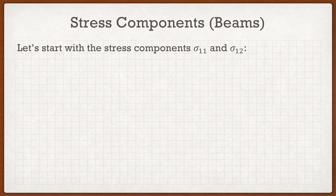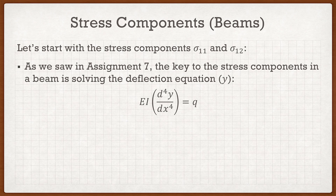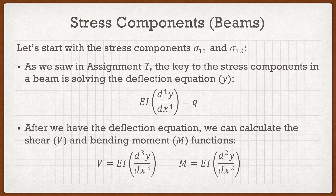This is why I keep going back to assignment number 7 — we actually solved for stress components sigma11 and sigma12 there, so this is more of a review. The first key step is solving the deflection equation: EI multiplied by the fourth derivative of the deflection function equals Q. We know EI and Q, so we just solve for deflection function y. With that, the shear function is EI times the third derivative of y, and the moment function is EI times the second derivative of y.